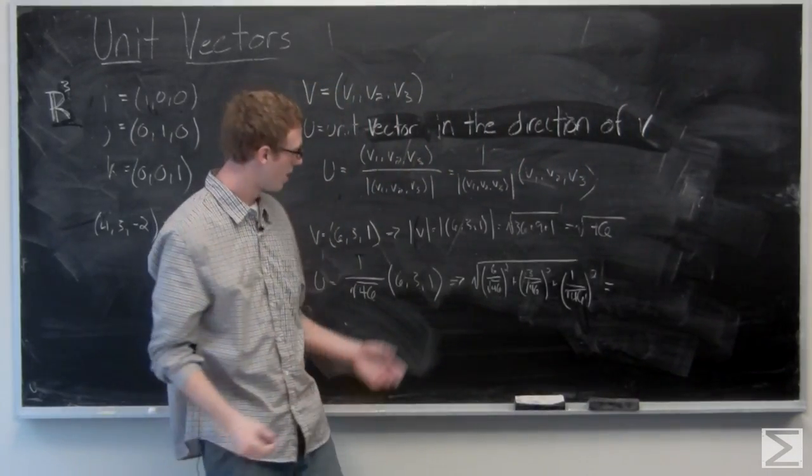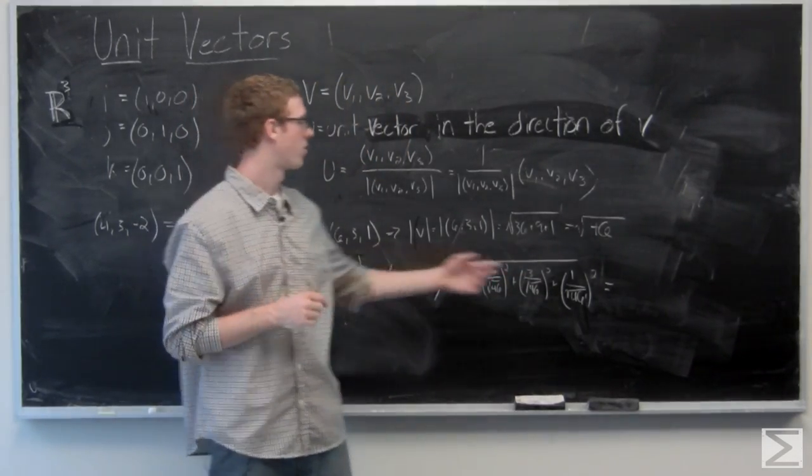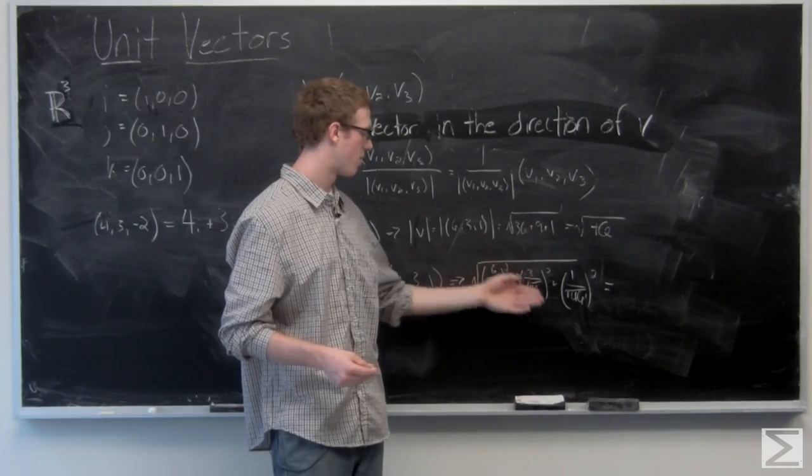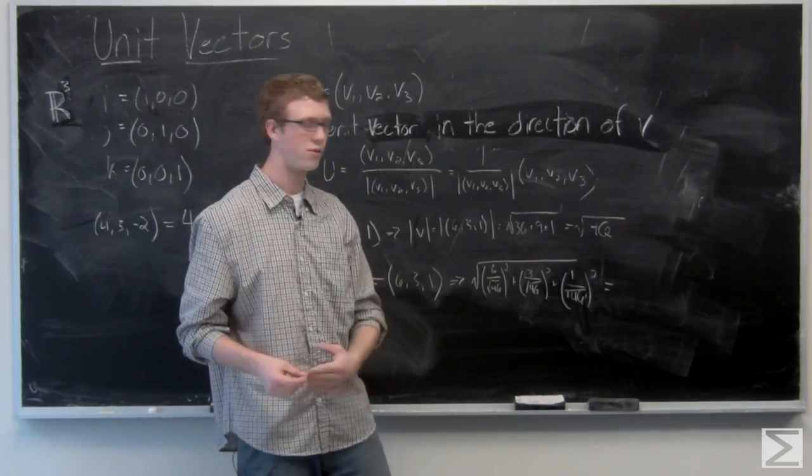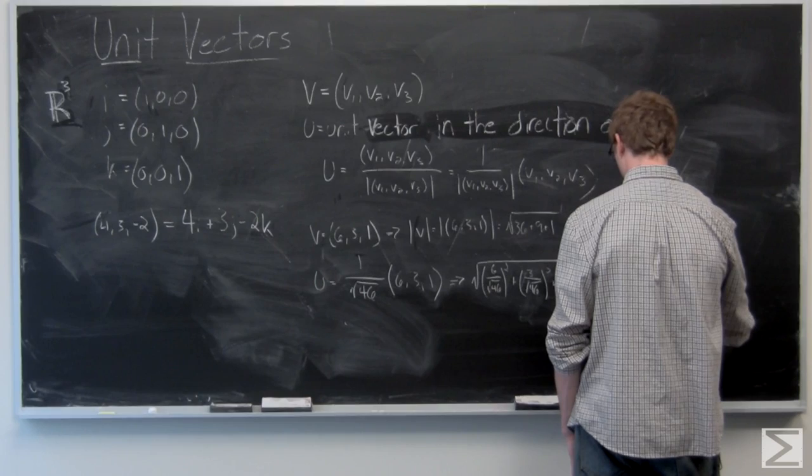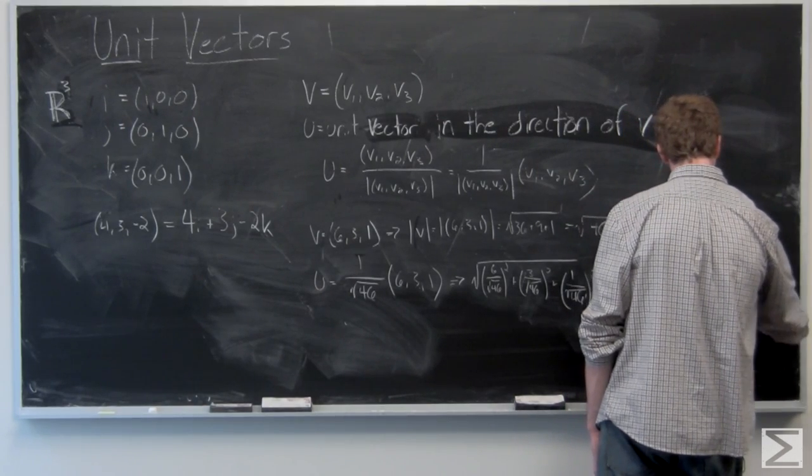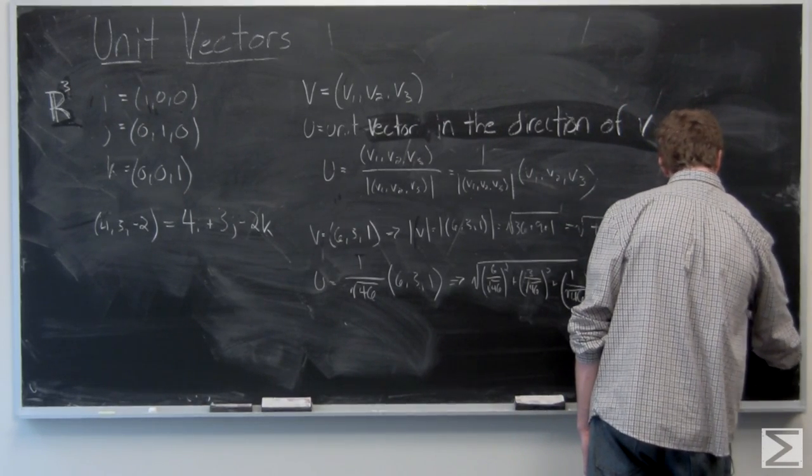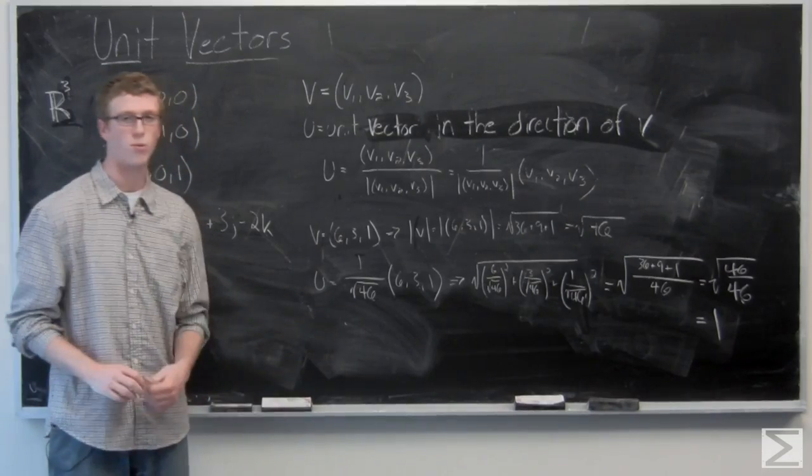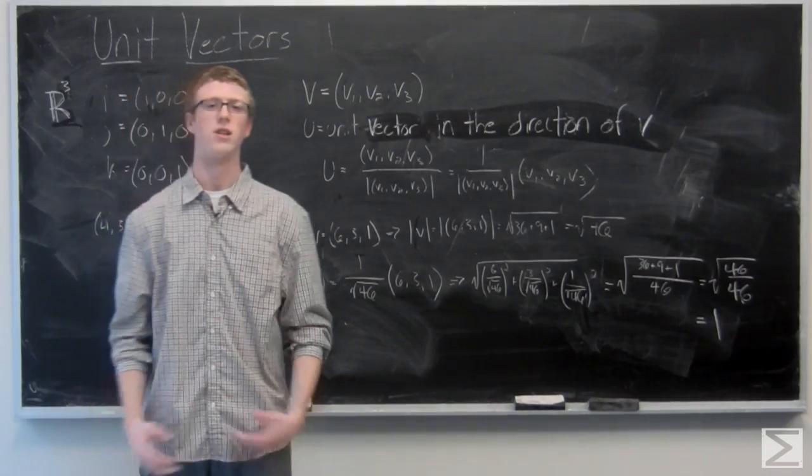So the magnitude of this vector is going to be 6 over square root of 46 all squared plus 3 over the square root of 46 all squared plus 1 over the square root of 46 all squared. It's just going to end up being 36 over 46 plus 3 over 46 plus 1 over 46. And as you can see, we do indeed get a unit vector with length 1 when we divide v by its own magnitude. And that's how you find a unit vector in the direction of a vector.